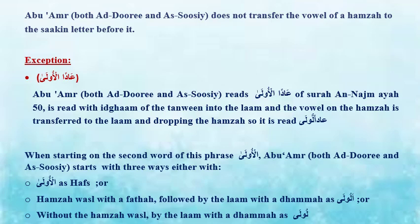When starting on the second word of this phrase, 'al-Ola,' Abu Amr both Addouri and Assusi starts with three ways: either with 'al-Ola' as Hafs, or with Hamza al-Wasli with Fathah followed by lam with Dhamma — so it is read 'Aadani al-Ola' — or without Hamza al-Wasli, by lam with Dhamma — so it is read 'Aadani al-Ola.'